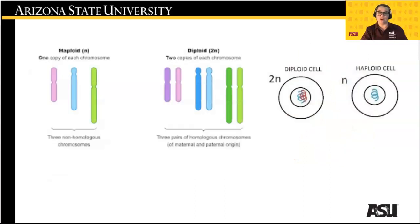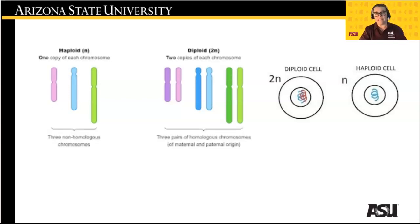Humans with their 23 pairs of chromosomes in their somatic or body cells are diploid organisms. The human gametes, or sperm and egg cells, each contain only 23 chromosomes, not 23 pairs. These are haploid cells. Diploid cells are 2n, or 2 copies of each chromosome — di, diploid. The haploid cells are 1n, or 1 copy of each chromosome — haploid, half-ploid, half of what the diploid has.